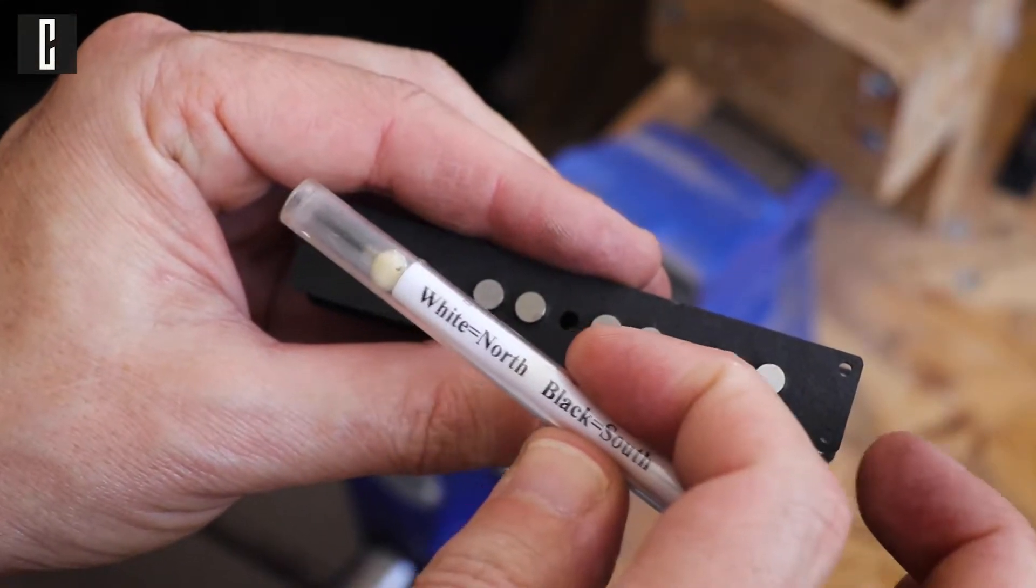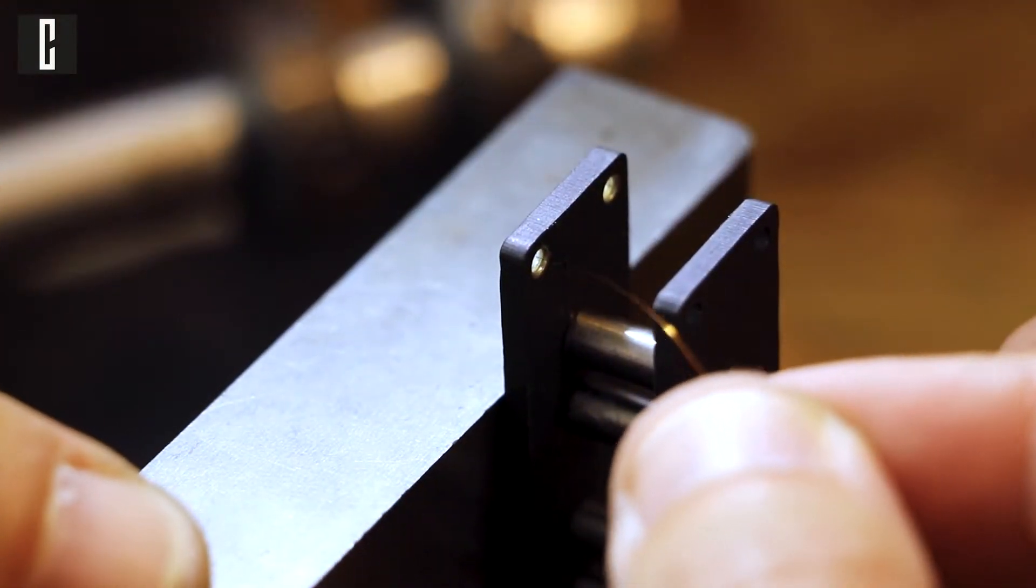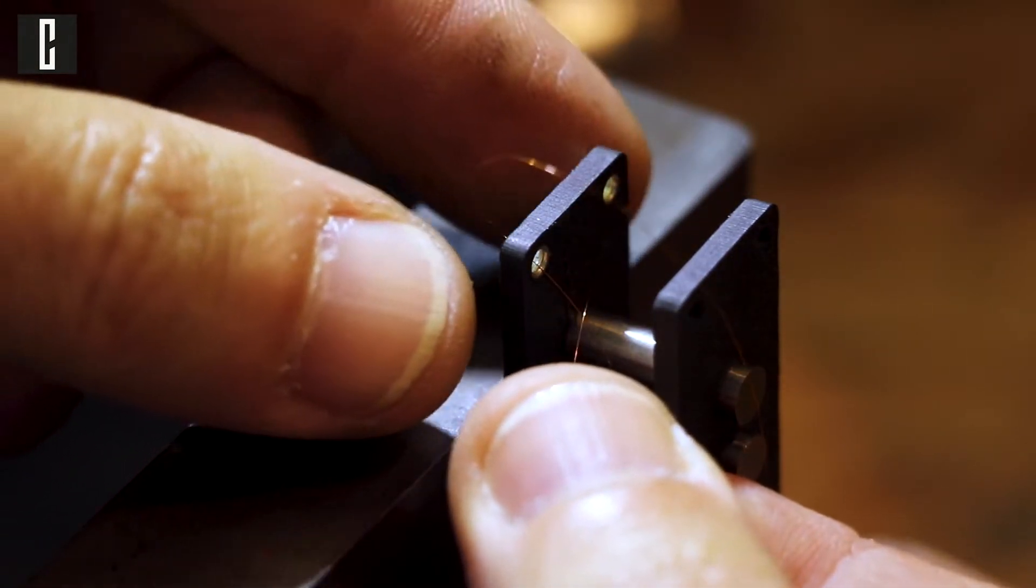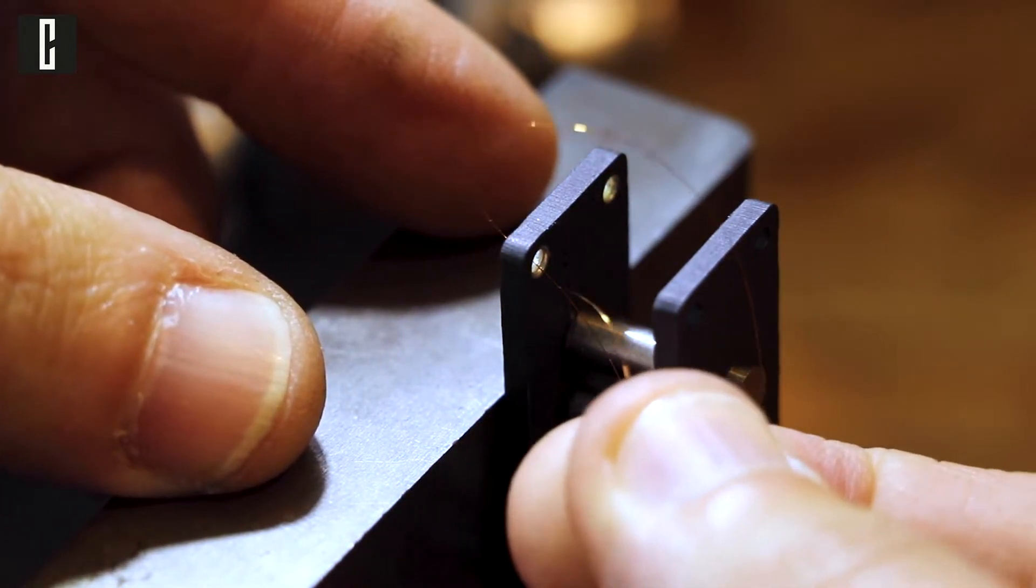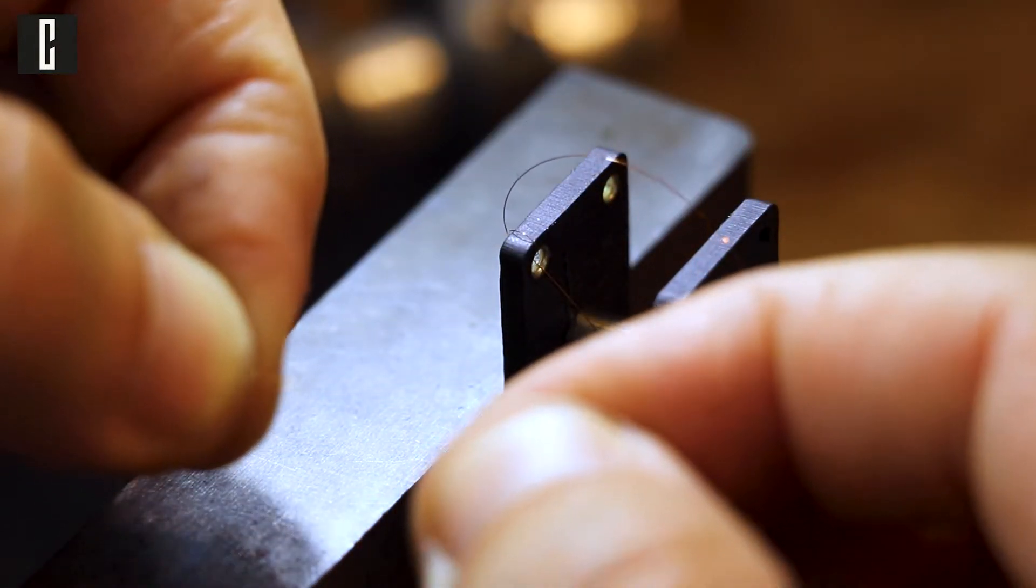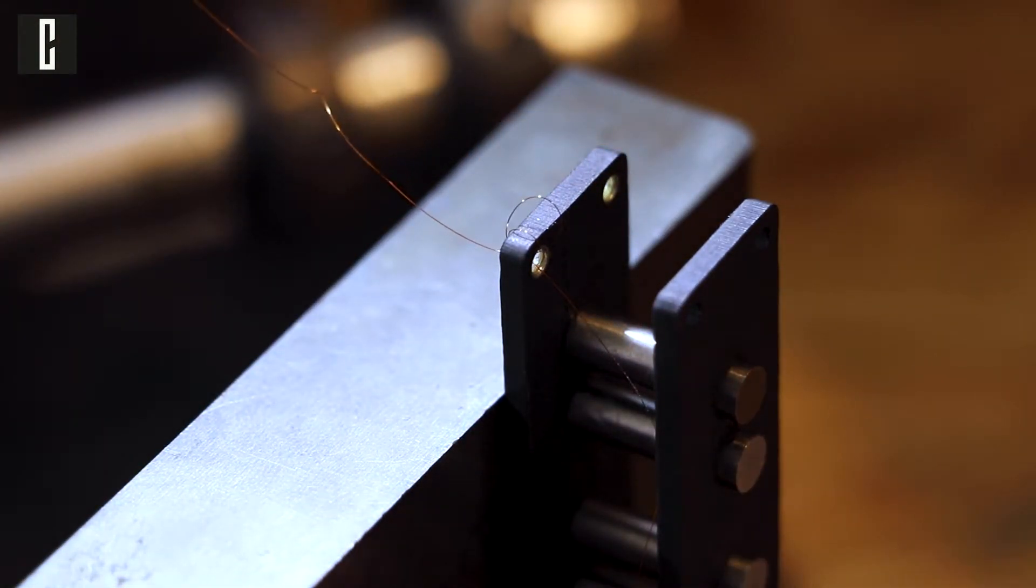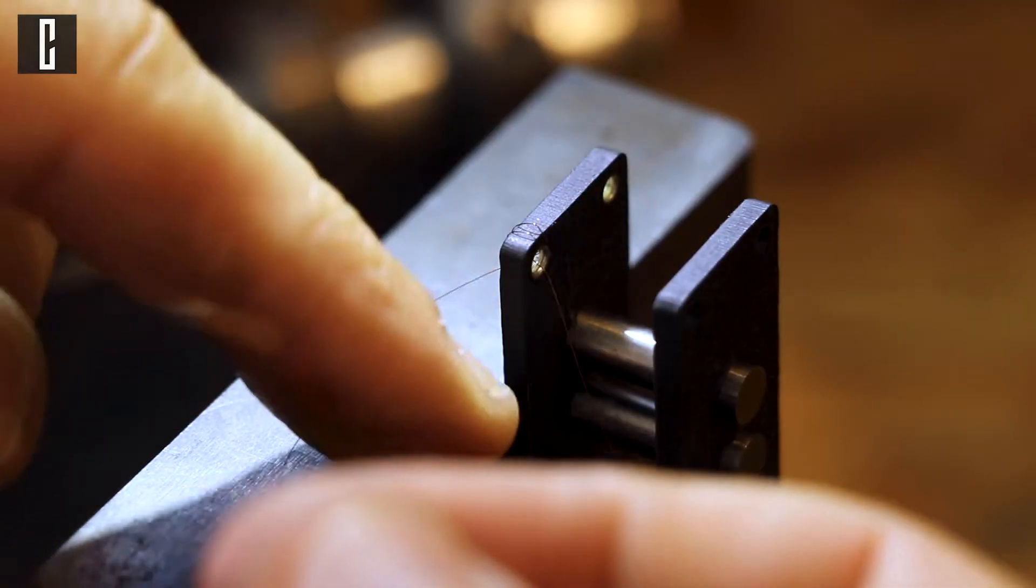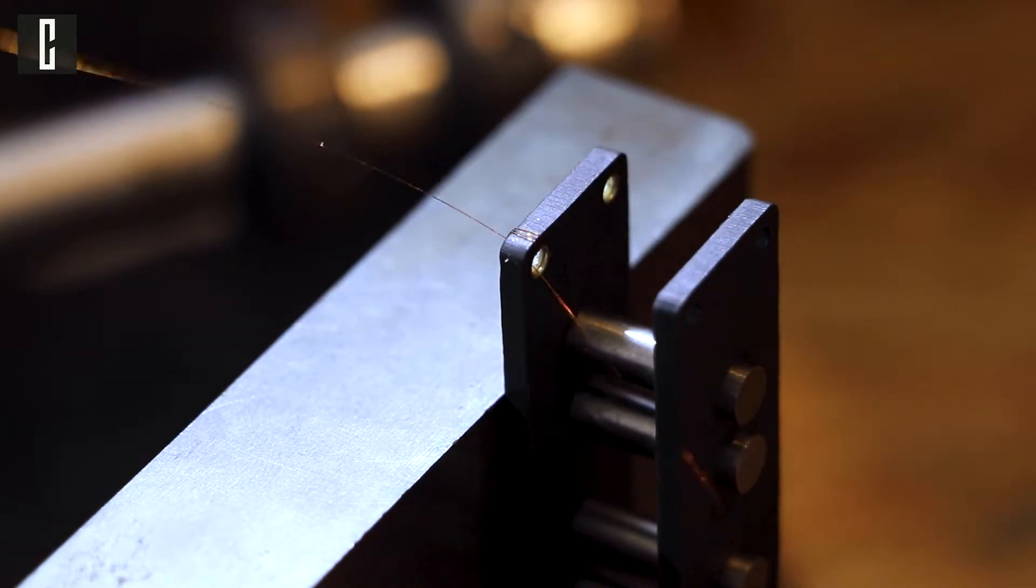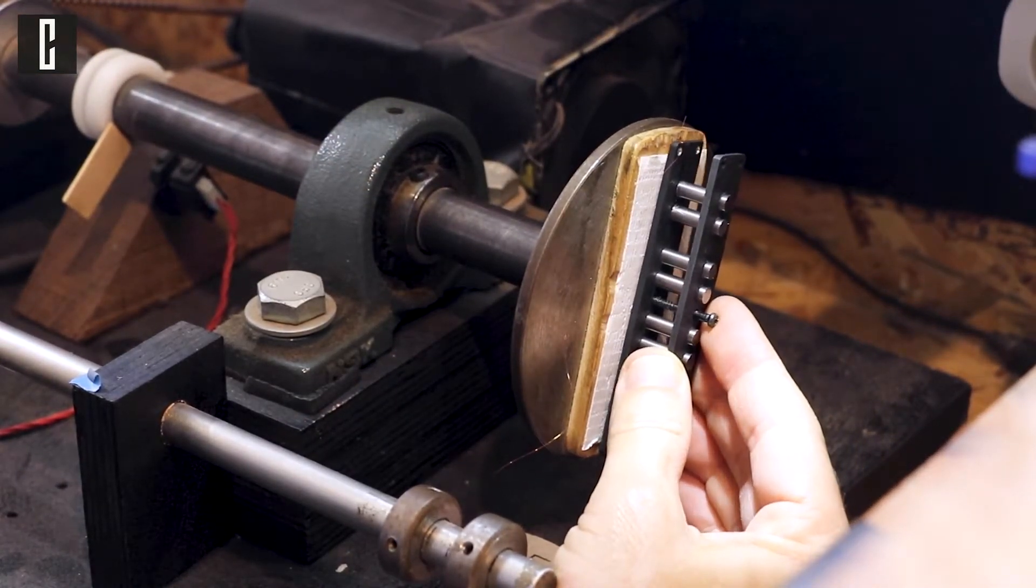You can use the polarity tester to see everything is correct. White is north and black is south, perfect. Before we wind the pickup, we need to insert our coil through the eyelet a few times so everything is tight and secure. This pickup is going to be wound counterclockwise, and that's why we're starting with this eyelet and not the other one.